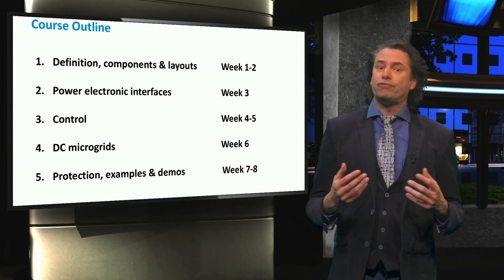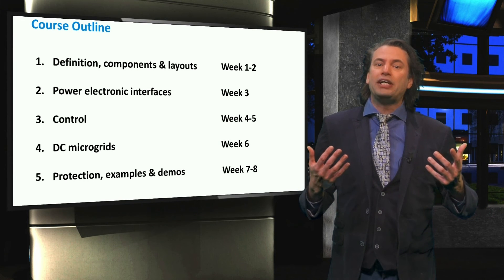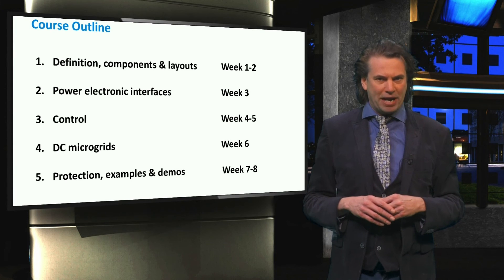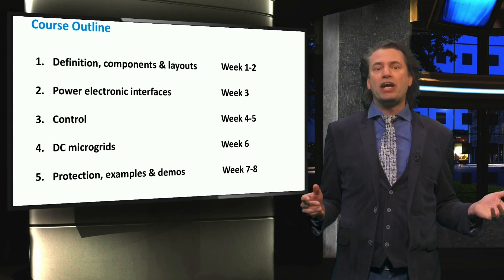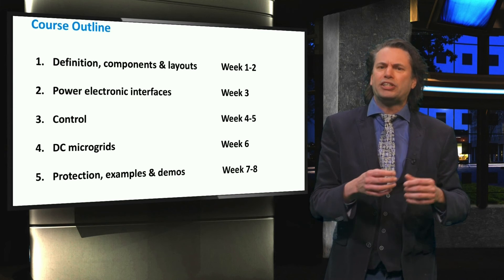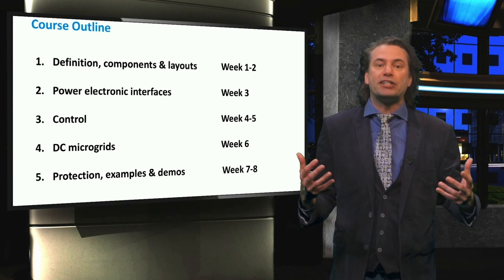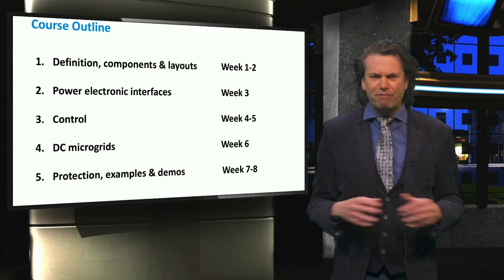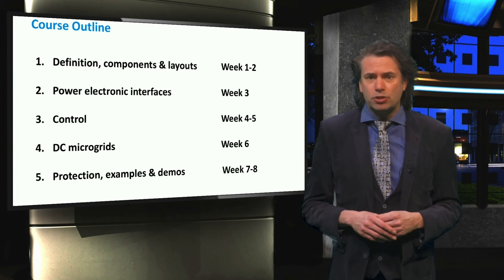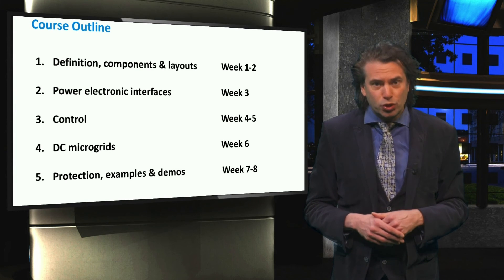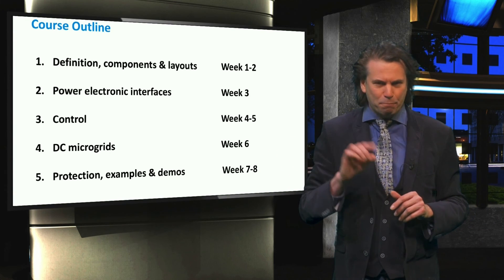Our course on the integration of Photovoltaic Systems in Microgrids is divided into five parts. After a short introduction, the first two weeks will address the definition, components and layouts of microgrids. In week 3 we will discuss power electronic interfaces in microgrids. Then in week 4 and 5 we will look into the control, which is seen as the heart of a microgrid. In week 5 we focus on the emerging DC microgrids. In week 7 and 8 we discuss protection schemes within microgrids and finish the course with an overview of demonstration sites. Let's now go through all of these five sections in a bit more detail.